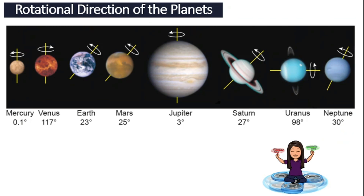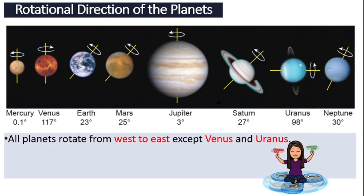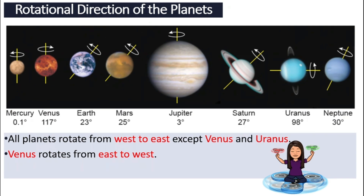Another thing to note is the rotational direction of the planets. All planets rotate from west to east, some at an angle, except two planets that rotate very differently: Venus and Uranus. All other planets rotate from west to east, with some tilted on their axis — like Earth, Mars, Saturn, and Neptune. Venus is very special because it rotates the other way, from east to west. And Uranus rotates on its side, as if it is laying down and rotating.